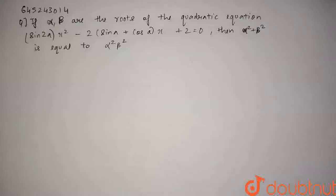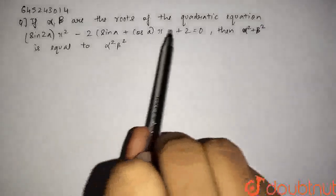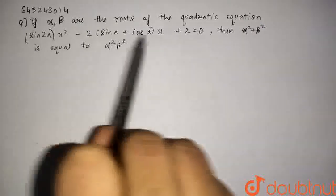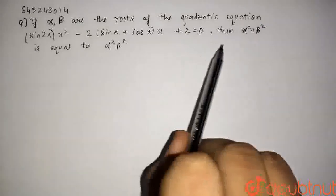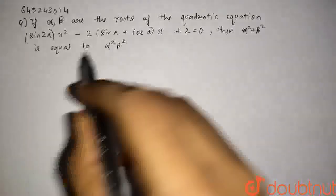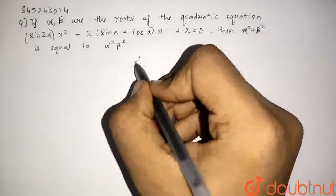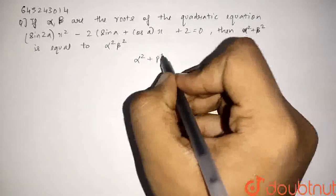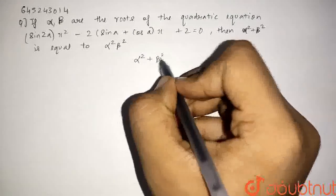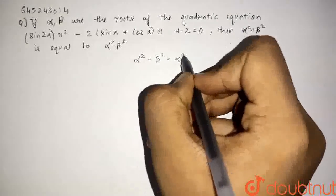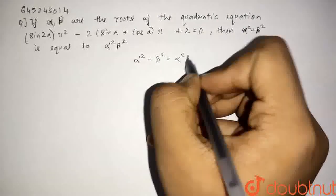Hello students, so the question for today is: if alpha and beta are given as the roots of a particular quadratic equation, we have to prove that alpha squared plus beta squared is equal to alpha squared times beta squared.